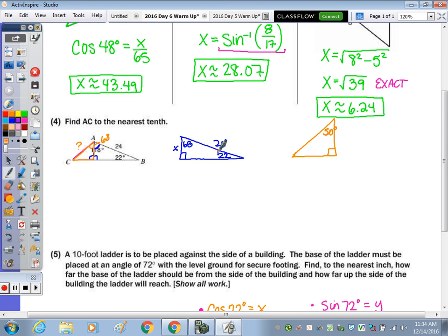So given the angle of 22, we have opposite over hypotenuse, which is going to be sine. So the sine of 22 degrees is equal to x over 24. And then x is going to be equal to 24 sine of 22 degrees. And I'm going to leave that in exact form. So this sine here is 24 sine of 22.